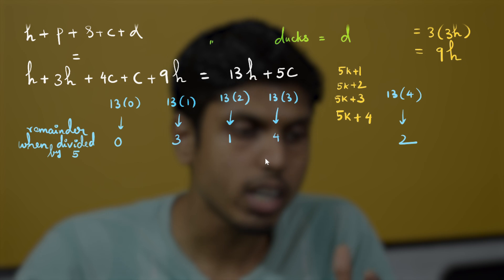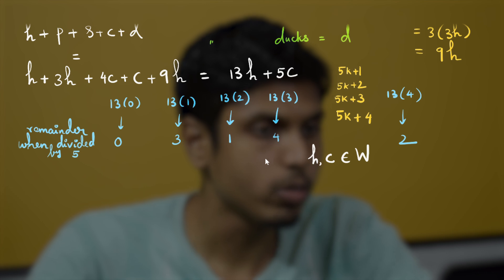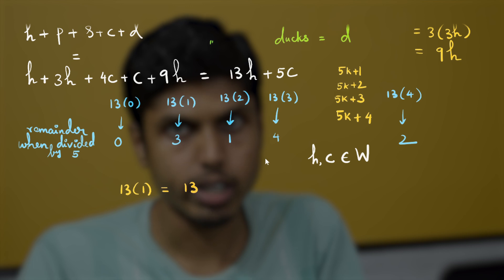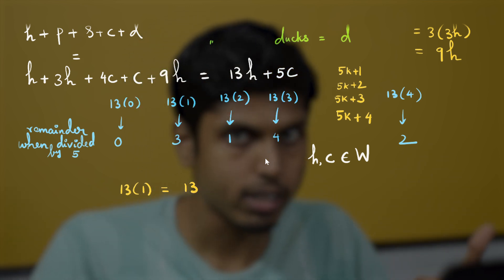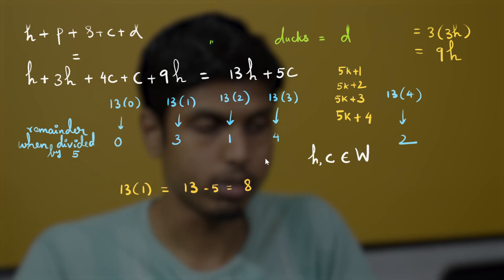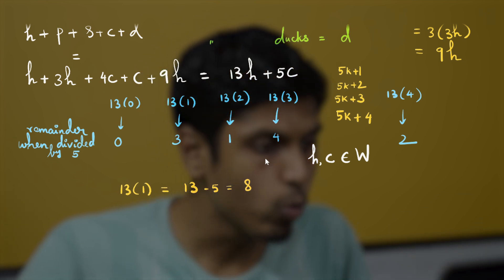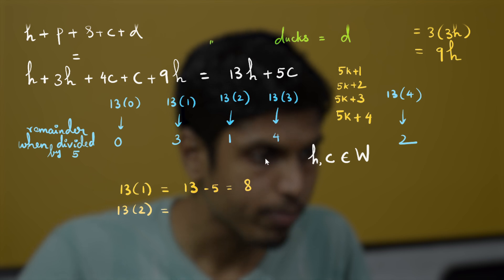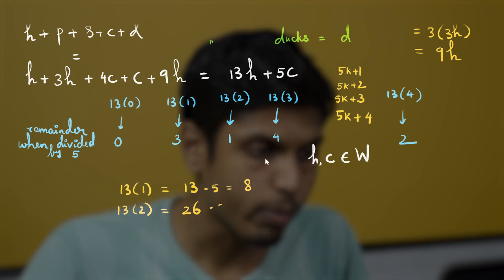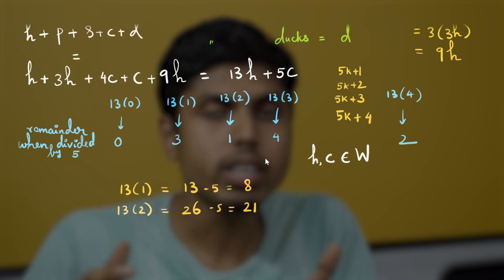Now consider the largest number that leaves a remainder of 3 but cannot be represented as 13h + 5c, where h and c are non-negative integers. Since 13×1 = 13 is the first number leaving remainder 3 when divided by 5, subtracting 5 gives 8, and 8 cannot be represented. Moving to remainder 1: 13×2 = 26 is the first such number, so subtracting 5 gives 21, and 21 cannot be represented.